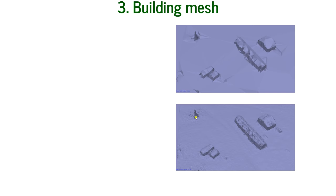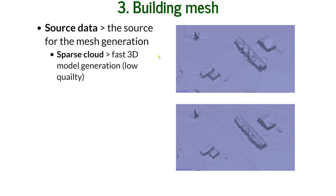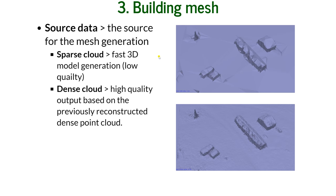For source data, you can choose the sparse point cloud for fast and low quality model generation, but we want to use dense point cloud for high quality output. You can see here this is based on sparse point cloud, and this is based on dense point cloud.